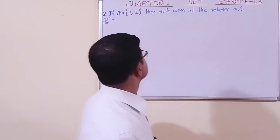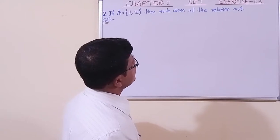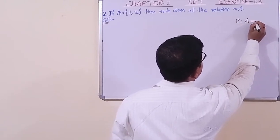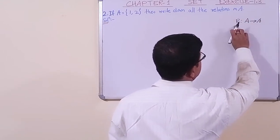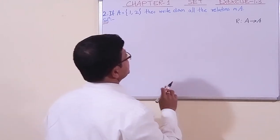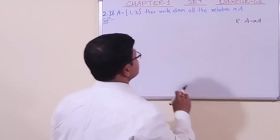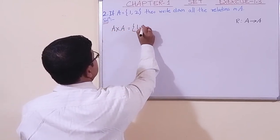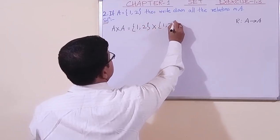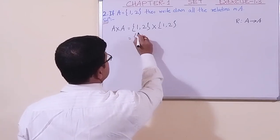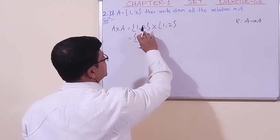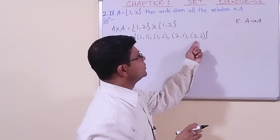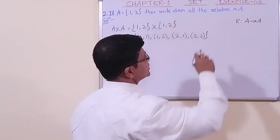Now we have taken question number 2. The question is: if A is a set of elements {1, 2}, then write down all the relations on A. The relation is from A to A. To find all relations, we first find the Cartesian product A cross A. The Cartesian product gives us: {(1,1), (1,2), (2,1), (2,2)}. We have to write down all subsets.